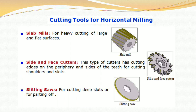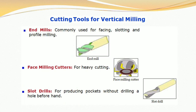End mills are the cutting tools for vertical milling. End mills are commonly used for facing, slotting, and profile milling. Next, face milling cutters are used for heavy cutting. Then slot drills are used for producing pockets without drilling a hole beforehand. There are pictures of end mill, face milling cutter, and slot drill.